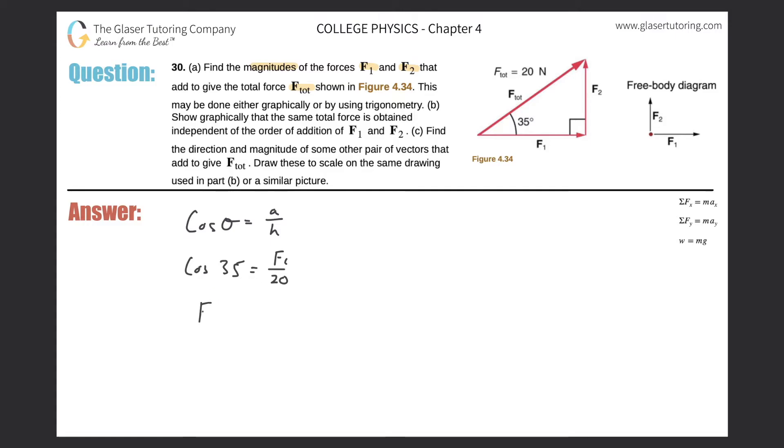So F1 will equal, take out the calculator, cosine of 35 times 20, and we get about 16.38. It looks like I've got to have two sig figs here, so I have to round down to 16. So this will be 16 newtons. That takes care of F1.